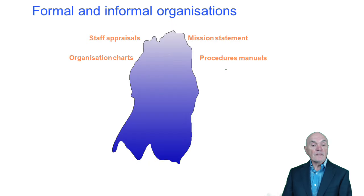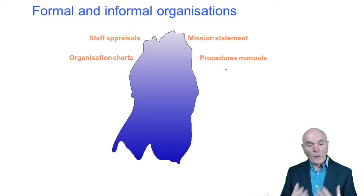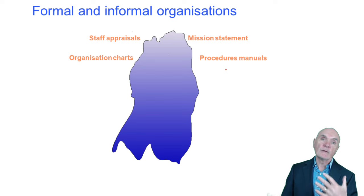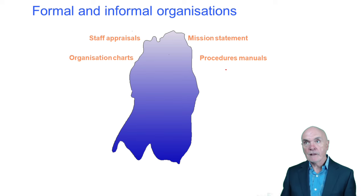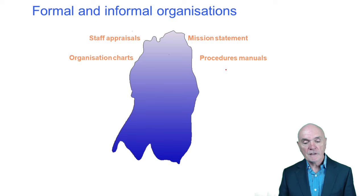And finally, we have formal and informal organizations. Formal stuff is basically what's written down. So the organization chart, probably written down. Procedures manuals, written down. Mission statement, kind of saying what the organization is for, what its values are, written down. Staff appraisals, written down. Training record, written down, and so on. This is all the stuff management knows about and management causes or is responsible.